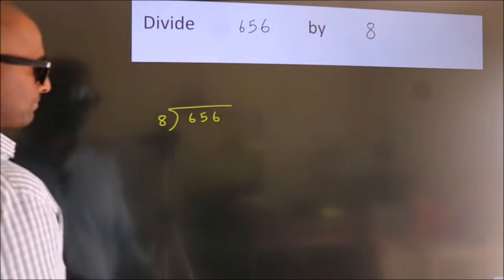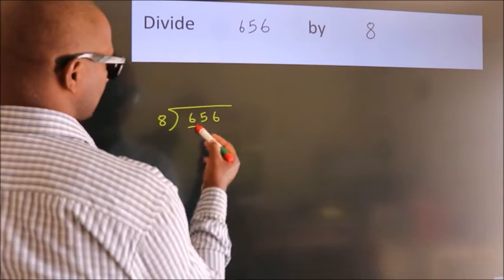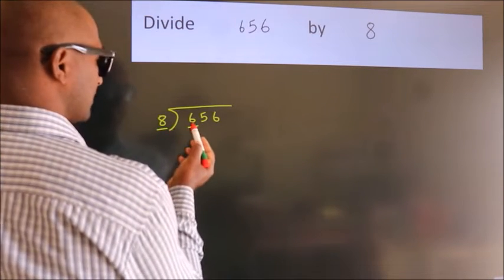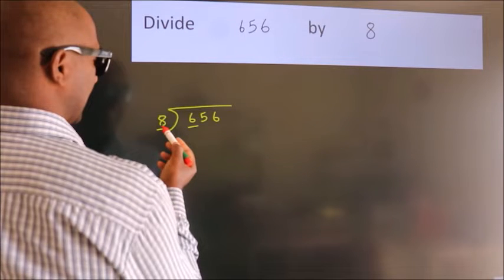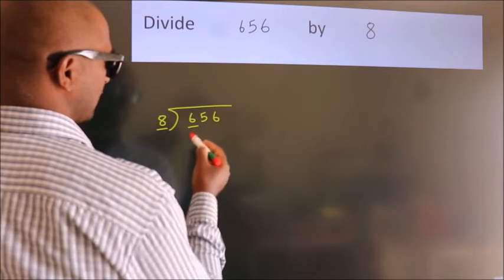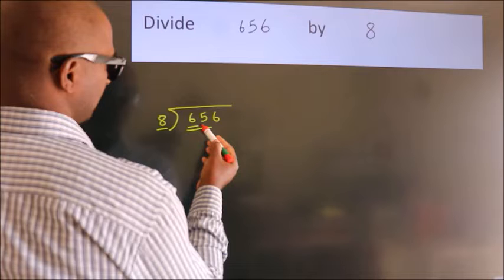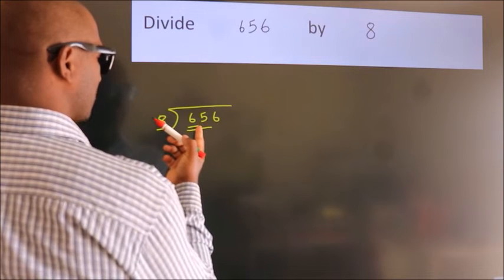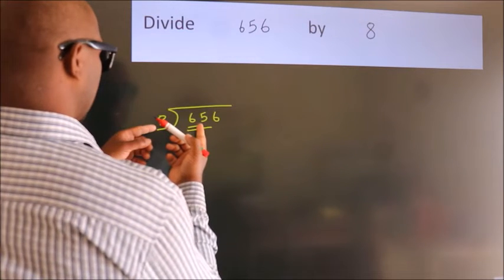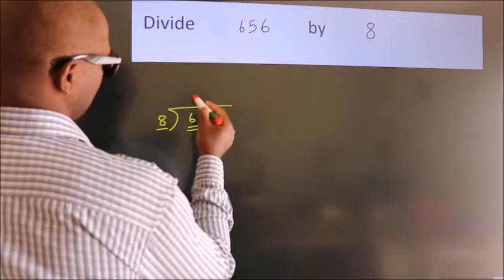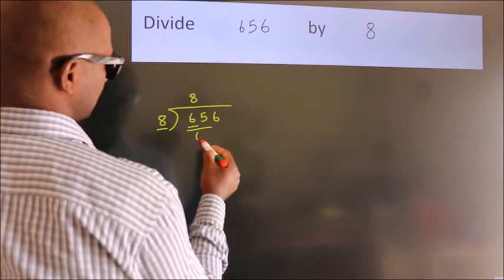Next, here we have 6, here 8. 6 is smaller than 8, so we should take 2 numbers: 65. A number close to 65 in the 8 table is 8 eights, 64.